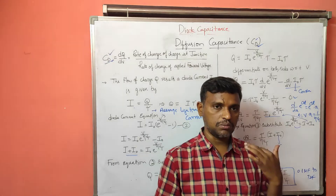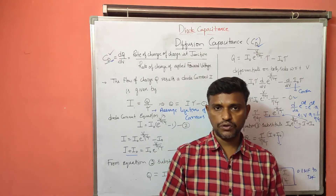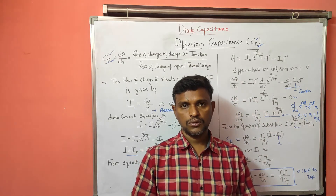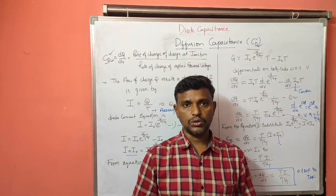This is about the diffusion capacitance of a PN junction diode. The transition capacitance or space charge capacitance is considered in reverse bias condition, while the diffusion capacitance is considered in the forward bias condition of a PN junction diode, and it is equal to τI/(ηVT). Thank you.